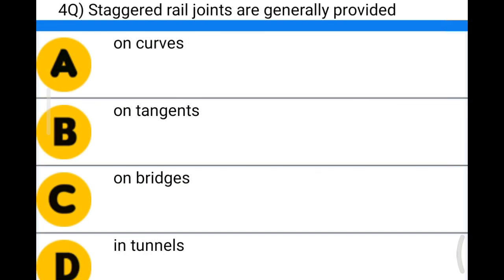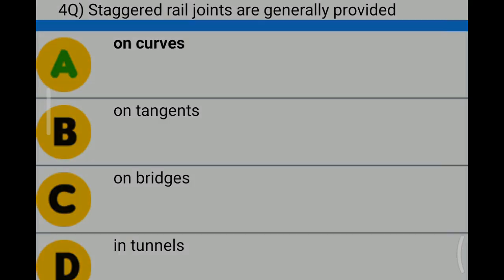Next question: staggered rail joints are generally provided — option A: on curves; option B: on tangents; option C: on bridges; option D: in tunnels. The correct answer is option A: on curves.